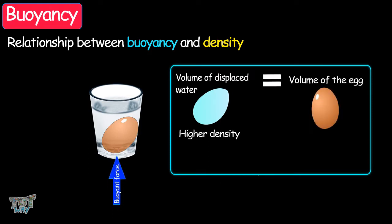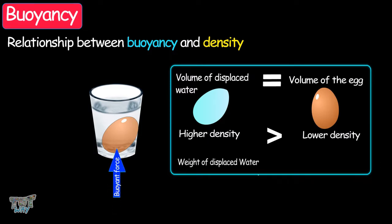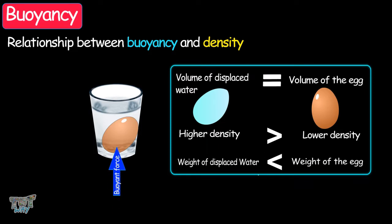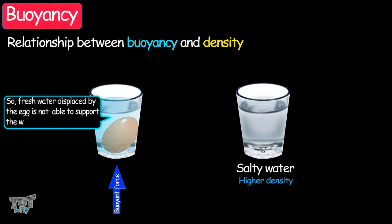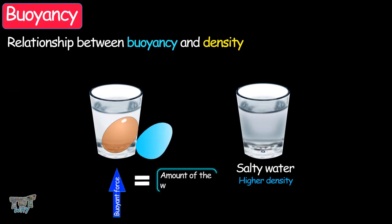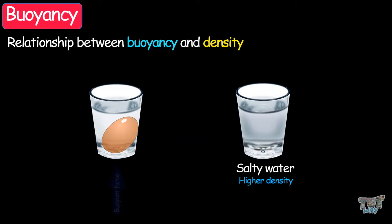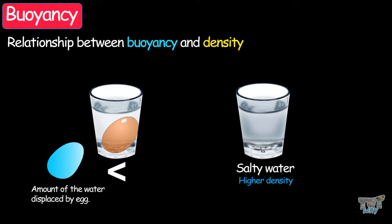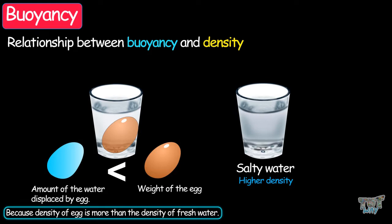The density of the egg is more than that of fresh water. So the water displaced by the egg, which is equal to its volume, will have less weight than the egg. Fresh water displaced by the egg is not able to support the weight of the egg — the buoyant force is less than the egg's weight, and because the density of the egg is more than the density of the water, the egg sinks.